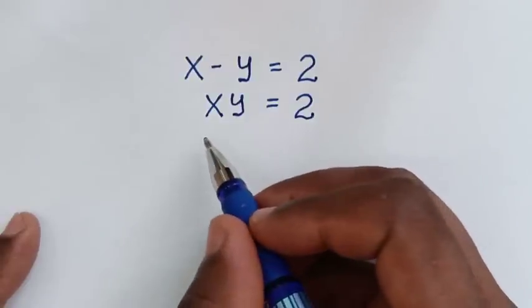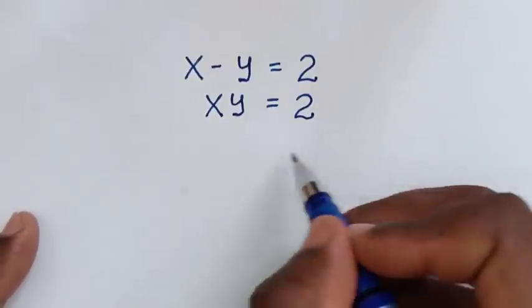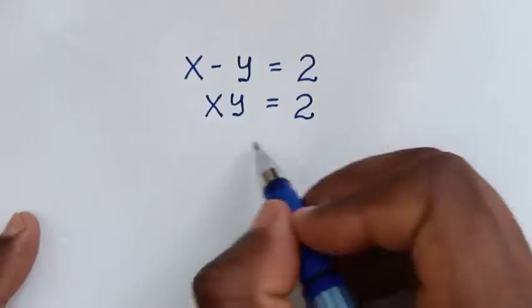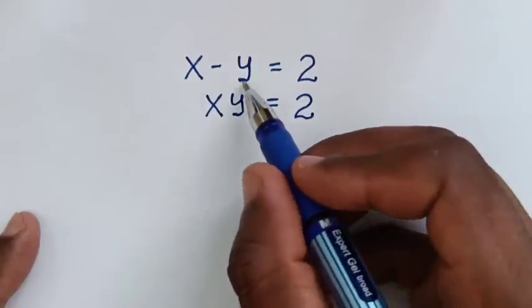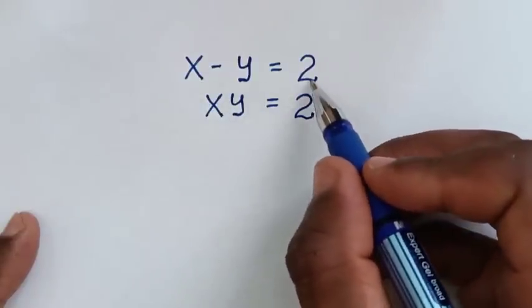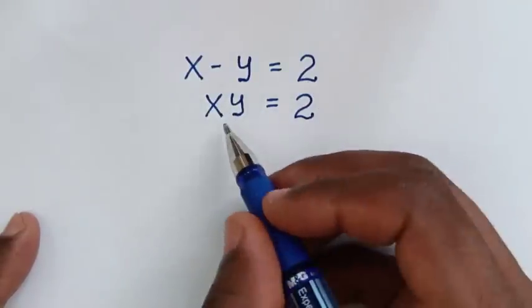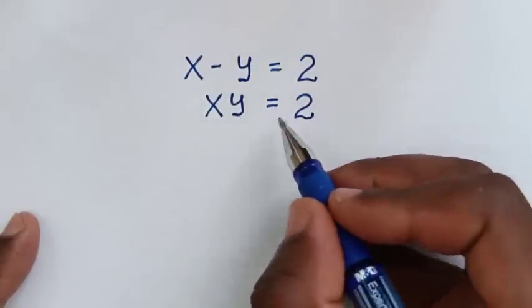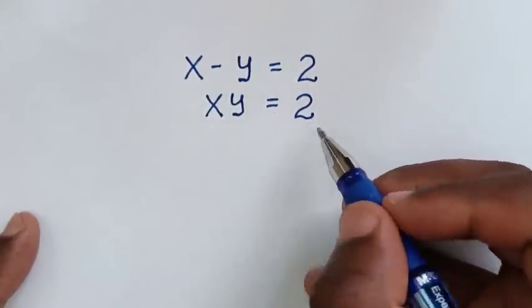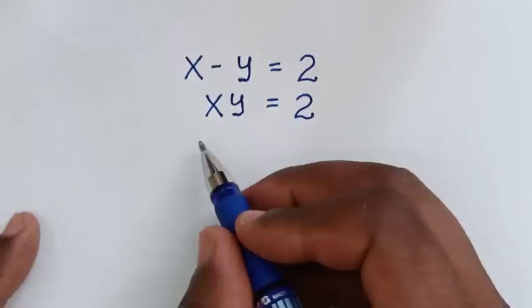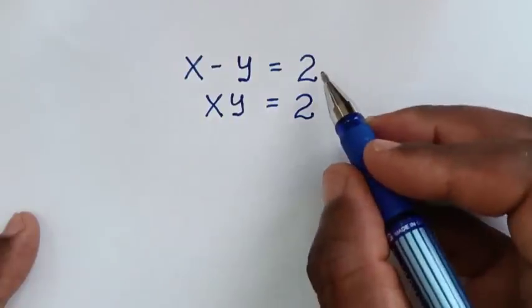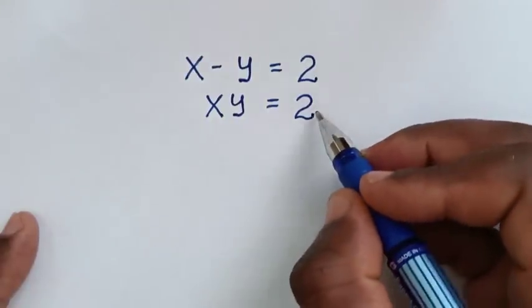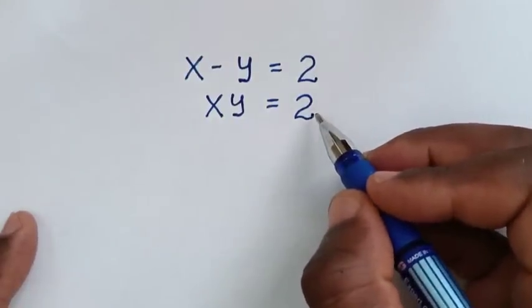Hello, you are welcome to solve this math problem which is x minus y is equal to 2, and x times y is equal to 2, to find the values of x and y from these two systems of equations.